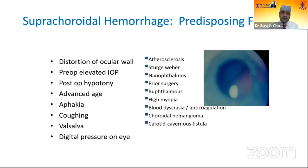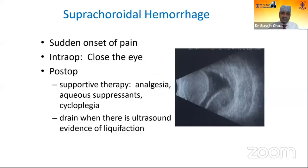Predisposing factors for suprachoroidal hemorrhage include distortion of the ocular wall, elevated IOP, post-operative hypotony, advanced age, aphakia, coughing, Valsalva, digital pressure on eyes, atherosclerosis, stenotic valve, nanophthalmos, prior surgery, hypertension, high myopia, black dyscrasia or anticoagulation, choroidal hemangioma, and carotid cavernous fistula. There is dramatic and sudden onset of pain. If it occurs intraoperatively, immediate closure of the eye is required. In post-operative patients, even with suture release it may be precipitated. Supportive therapy: analgesia, aqueous suppressants, cycloplegics. Drain when there is ultrasonic evidence of liquefaction, otherwise there may be a fresh hemorrhage.